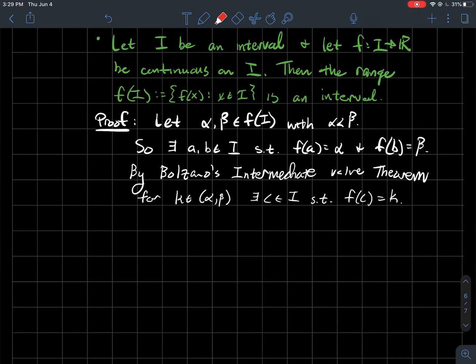There should exist some c in my domain I such that f(c) equals that k. That says k is in f(I) for every single k between alpha and beta. Another way to think about that means the interval from alpha to beta is a subset of the range f(I).